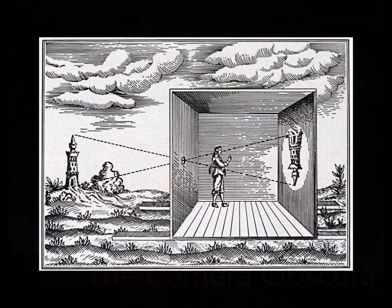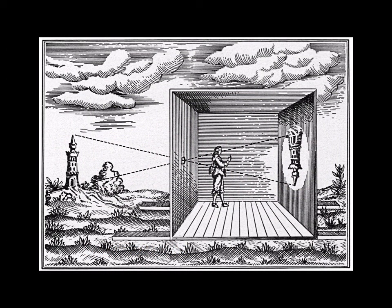Pretty cool, right? Aristotle stumbled upon this concept — noticing how light passes through a hole, and that given the diameter of the hole and the proximity of the back wall to that hole, it would create an image. That goes back to ancient Greece. He noticed this during a partial eclipse of the Sun, so there were some interesting light dynamics involved.